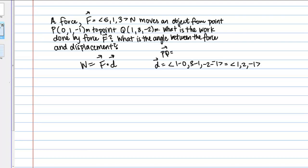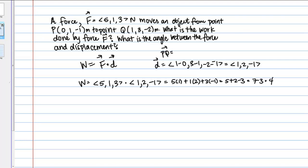Now that we have the displacement vector, to find the work we're just going to calculate the dot product. My force vector is (5, 1, 3), and I'm going to compute the dot product with my displacement vector (1, 2, -1). That dot product is 5×1 plus 1×2 plus 3×(-1), which is 5 plus 2 minus 3, or 7 minus 3, which is 4.